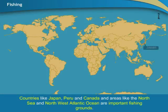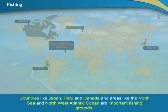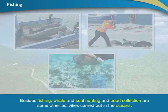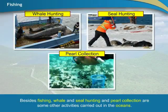Countries like Japan, Peru and Canada, and areas like the North Sea and the North West Atlantic Ocean, are important fishing grounds. Besides fishing, whale and seal hunting and pearl collection are some other activities carried out in the oceans.